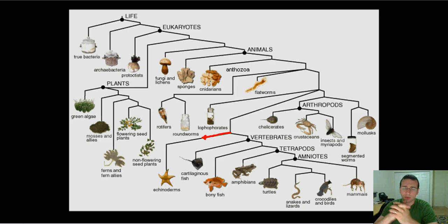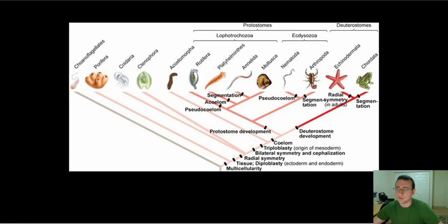But I also wanted to show you that there's a different way of arranging this. Look, if you look carefully at this tree of life, you will see that they did it quite differently. They put the development of internal cavities before the development of protostomes and deuterostomes, which is the same thing that it kind of did.